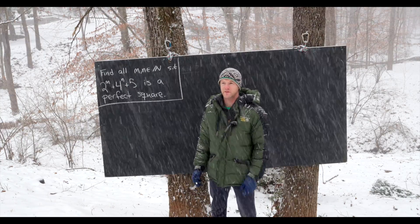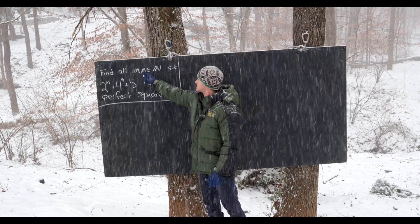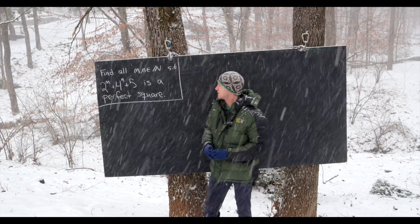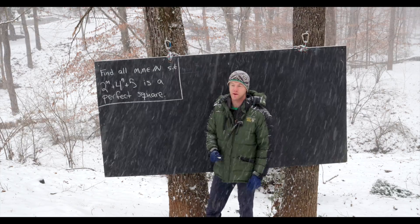Here we're going to look at a nice quick number theory problem. So our goal is to find all natural numbers m and n such that 2 to the m plus 4 to the n plus 5 is a perfect square.